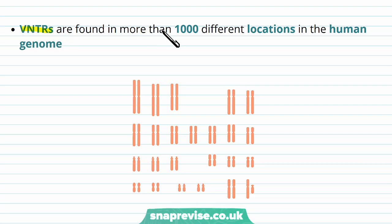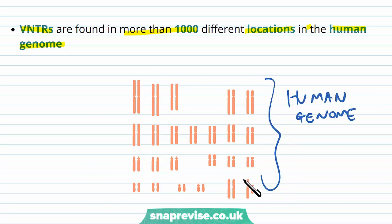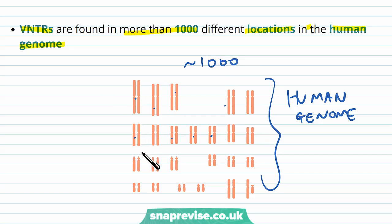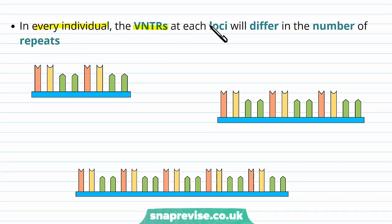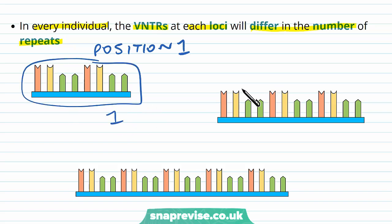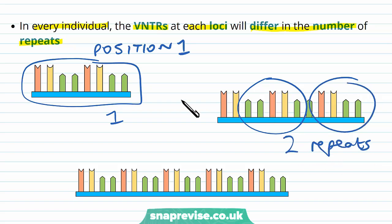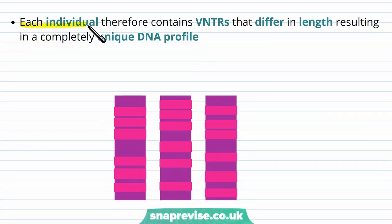These sections, or VNTRs, are found in more than 1,000 different locations in the human genome. Everyone's genome will be slightly different and have variations, but there are particular locations — roughly a thousand — where we have these repeats in the non-coding region of DNA. In every single individual, the VNTRs at each loci, or each location, will differ in the number of repeats. For example, at position number one, one individual may have one repeat, whereas another individual may have two repeats. This means that each individual contains VNTRs which differ in length at different locations, which means they have a completely unique DNA profile.